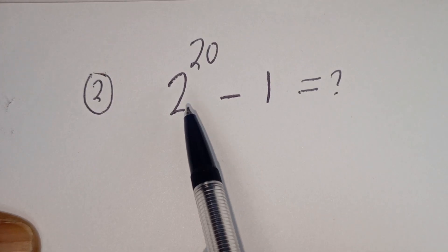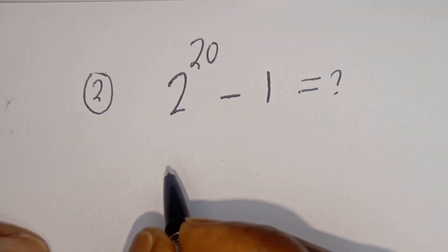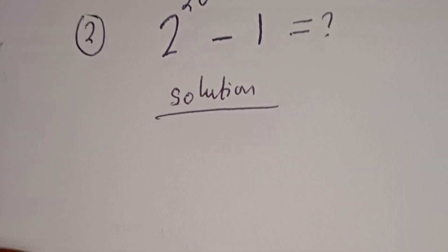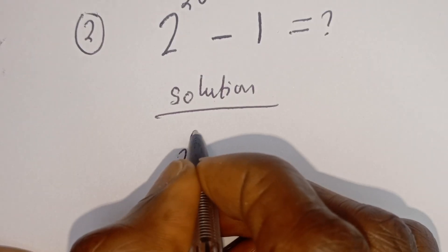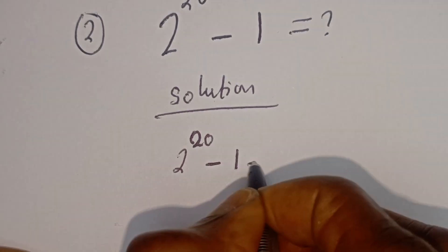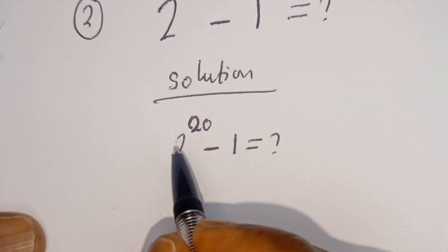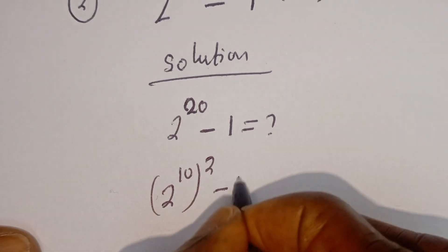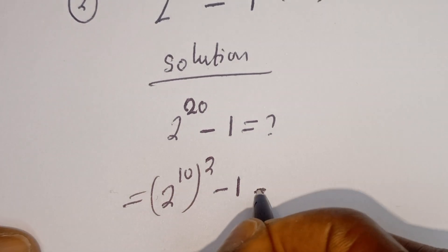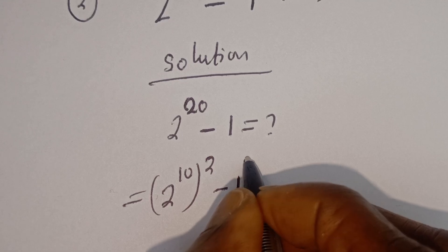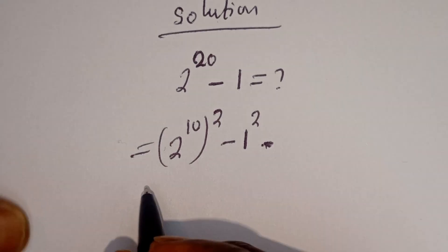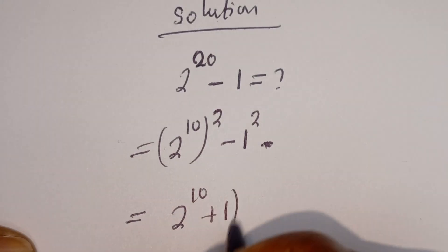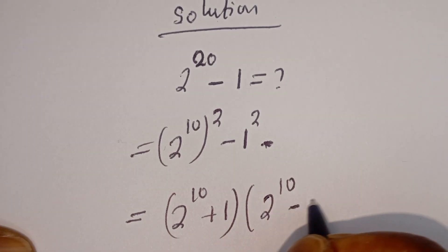This is the second question: if you have 2 to the power of 20 minus 1, what is the answer? Solution: 2 to the power of 20 minus 1 equals what? 2 to the power of 20 can be written as 2 to the power of 10, squared, minus 1. This 1 can also be written as 1 squared, and this is in the form of a perfect square. Then this is equal to 2 to the power of 10 plus 1, bracket, 2 to the power of 10 minus 1.